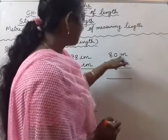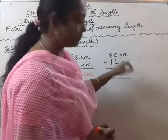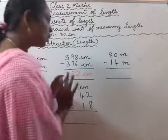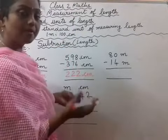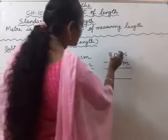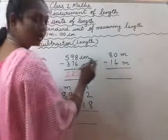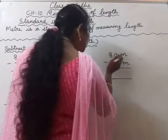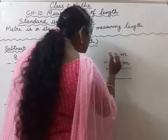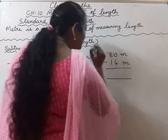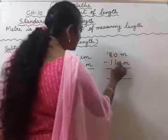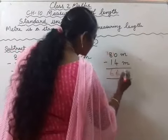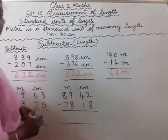Now we are going to subtract 80 meter minus 14 meter. We will subtract these two using the borrowing method, same as how borrowing was taught before. So 0 minus 4 — we cannot subtract because the top number is smaller than 4. So we borrow from the tens place. This will become 10 and 8 will become 7 after giving. So 10 minus 4 will be 6, and 7 minus 1 will be 6. So 66 meter is the answer.